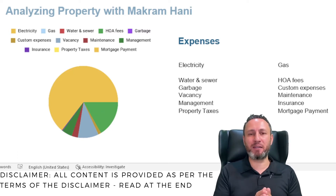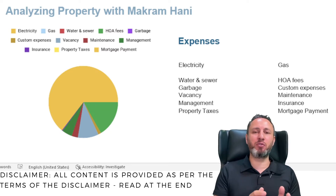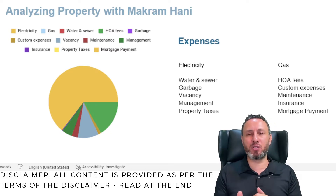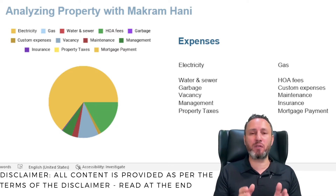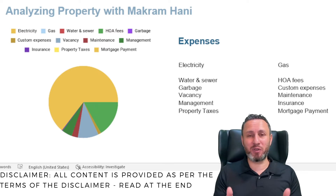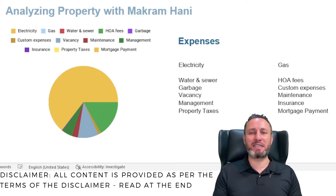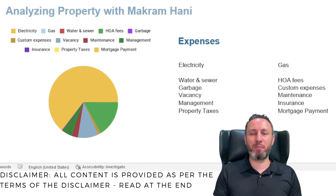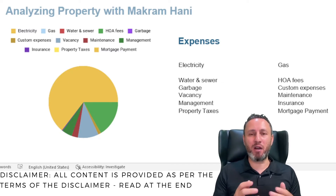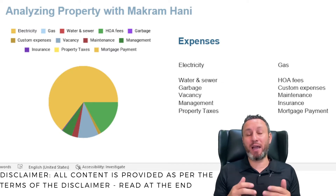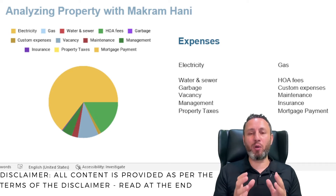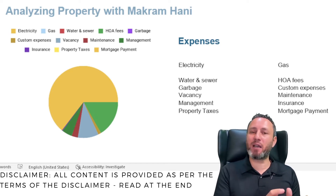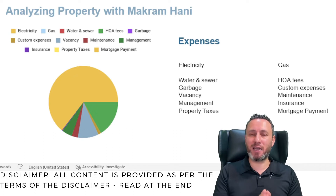Some of you would tell me that your property is insured because the bank forced you to get insurance when you took a mortgage. I would tell you that most of the time — 99% of the time — that insurance is non-comprehensive. So for you to get proper insurance, you need a comprehensive insurance that would cover you against the risks of owning that property so that it doesn't become a liability — it stays an asset.